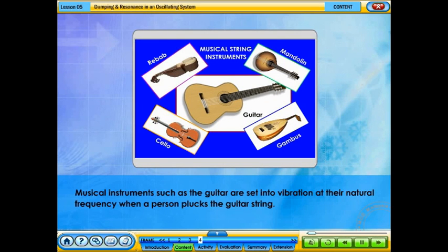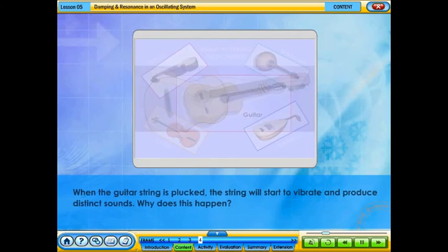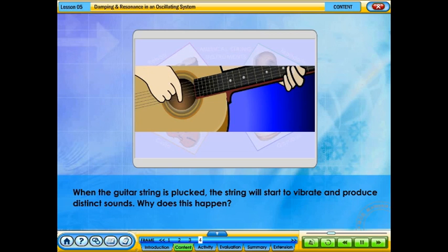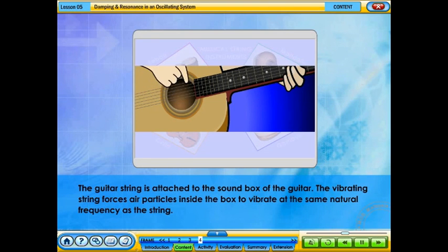Musical instruments such as the guitar are set into vibration at their natural frequency when a person plucks the guitar string. When the guitar string is plucked, the string will start to vibrate and produce distinct sounds. Why does this happen?